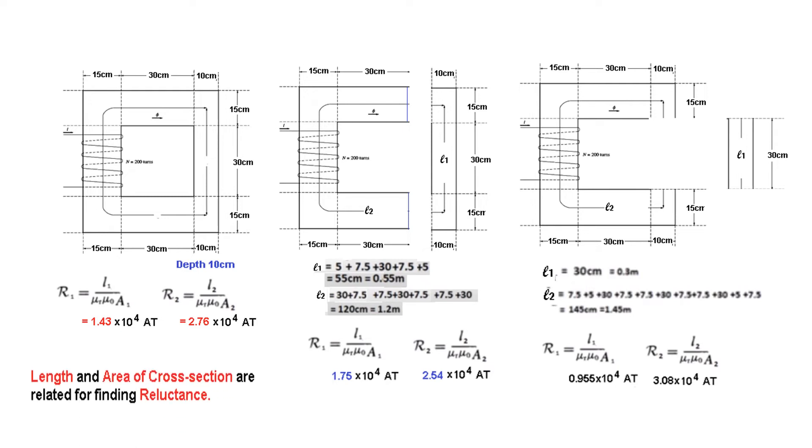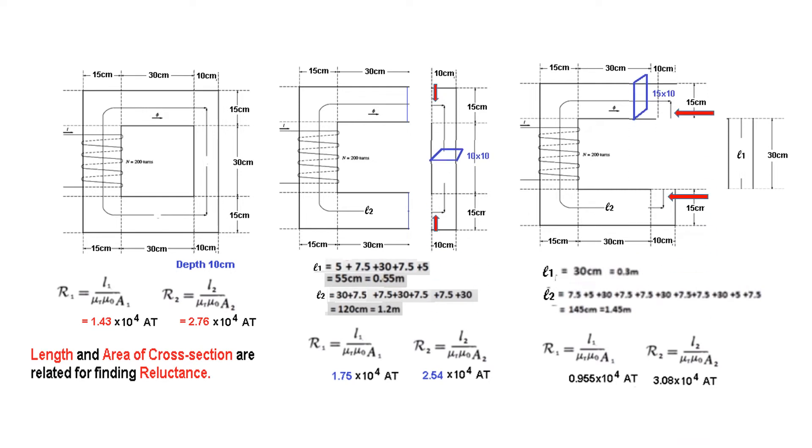And what I realized was that what I'm not considering is that the length and cross-sectional area are related for finding reluctance. So like in this case, whatever is the length L1, here we have to use the corresponding area of cross section. And similarly, for L2, we have to use the corresponding area of cross section. When this part I'm including in the vertical bar, whose area of cross section is 10 by 10, then I'm making a mistake because this part or this part is not part of the 10 by 10 cross-sectional area. Rather, it is part of this 15 by 10 cross-sectional area. So that was the mistake.